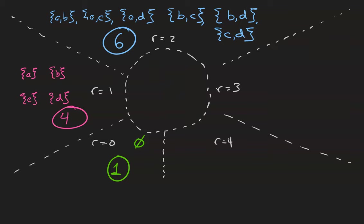Next let's count the sets that have three elements. That's going to be the sets A, B, C, the sets A, B, D, the sets A, C, D, and the set B, C, D.